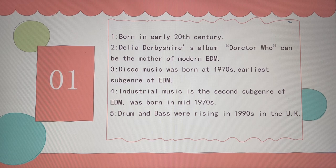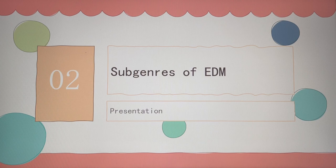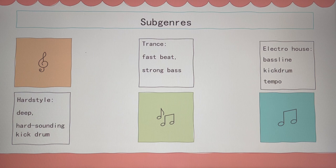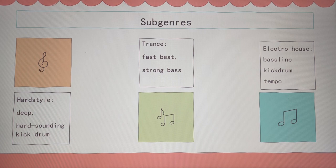I am going to talk about some of the most popular branches of electronic dance music. The first one is hardstyle. It originated in the Netherlands and evolved from hardcore. Hardstyle usually consists of a deep, hard-floor drum and an incongruous, sensitive melody and a distorted sound.